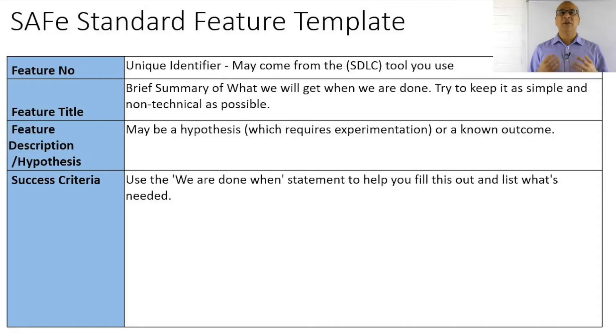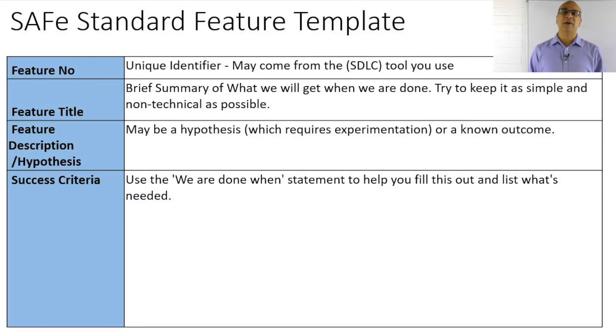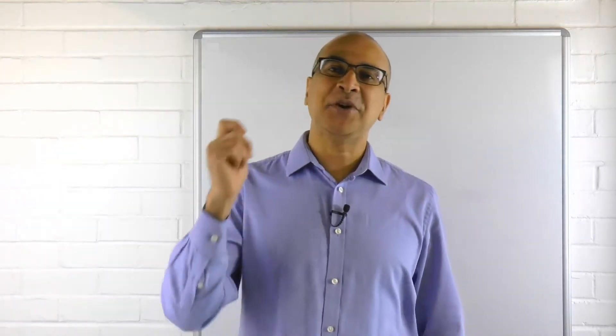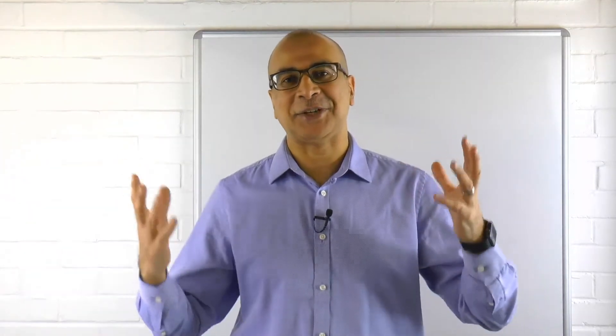Let's have a look at the standard feature template from the Scaled Agile Framework. The first thing you'll have is a feature number, probably generated from your SDLC tool or whatever mechanism you're using to store your requirements. Then you want a title. Remember, keep the title as simple as possible — make sure it's business-oriented, not technically heavy or too focused on technology. I use the grandma test: if you can bring your grandma in and she looks at it, she should understand it — like 'customer registration.'